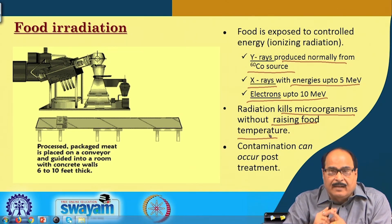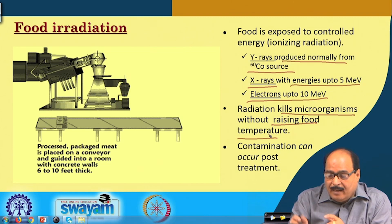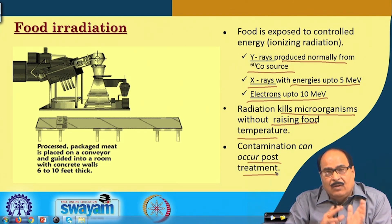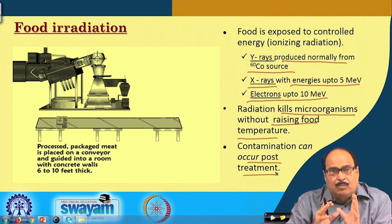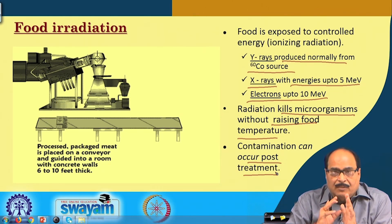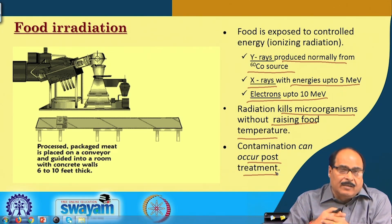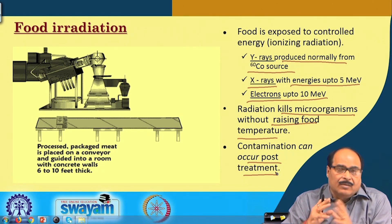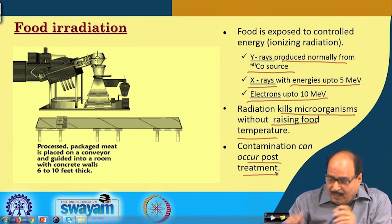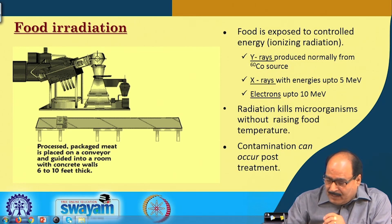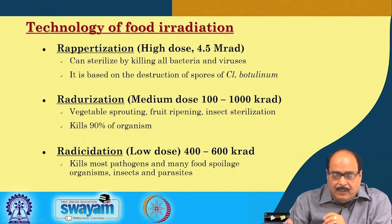However, one must take care that contamination can occur post-treatment. After the food material is exposed to irradiation, proper care must be taken so that it does not come into contact again with microorganisms. Recontamination should be avoided, otherwise the whole purpose of the process will be defeated.